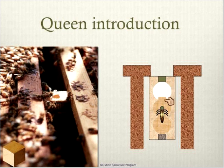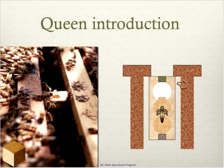Remove the cork from the end of the chamber where the queen candy is located — that candy plug acts as a time-release mechanism, so workers slowly chew it out, and by the time she has access to the combs she smells like the workers and they'll be much more readily accepting of her. Make sure the candy end faces up rather than down, because if it's humid the candy can get gummy and the queen can get stuck. Keep the process slow — two to three days is better than overnight. Rushing the release by poking a hole through the candy is not recommended.